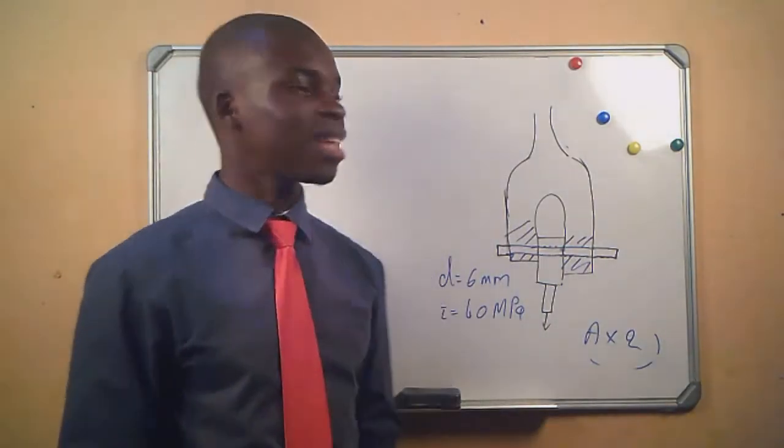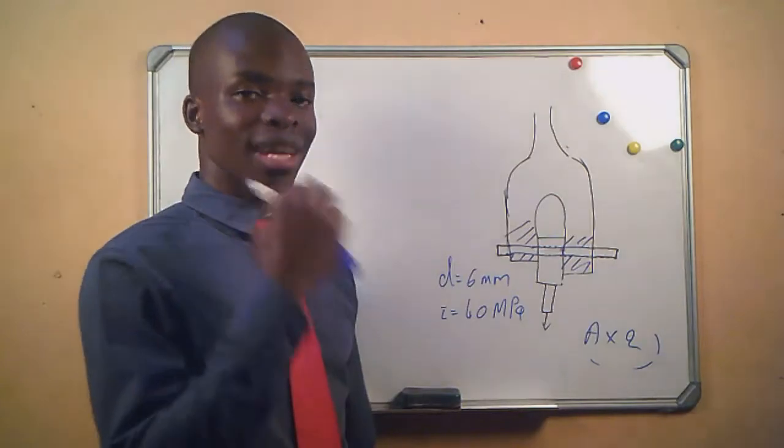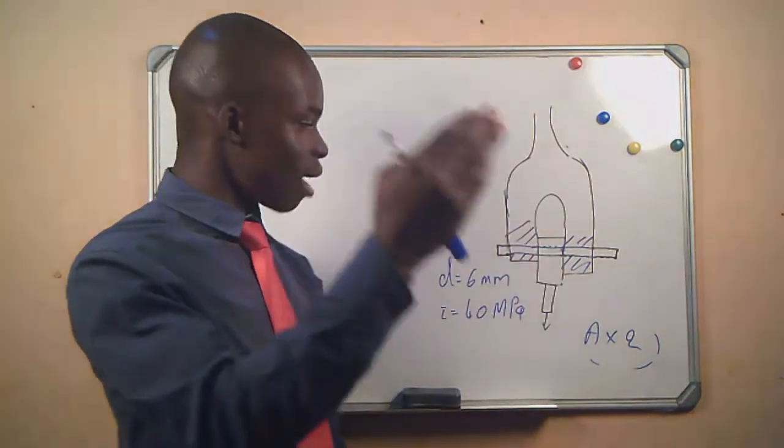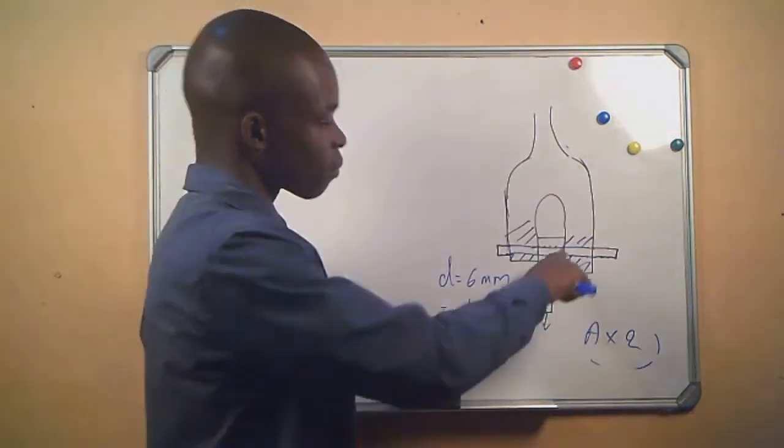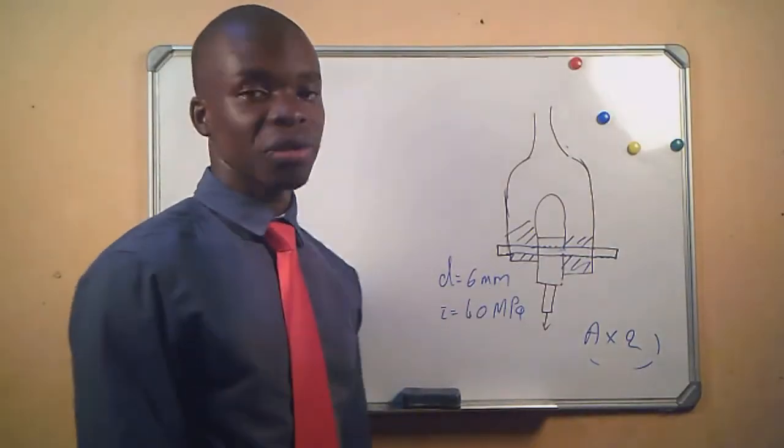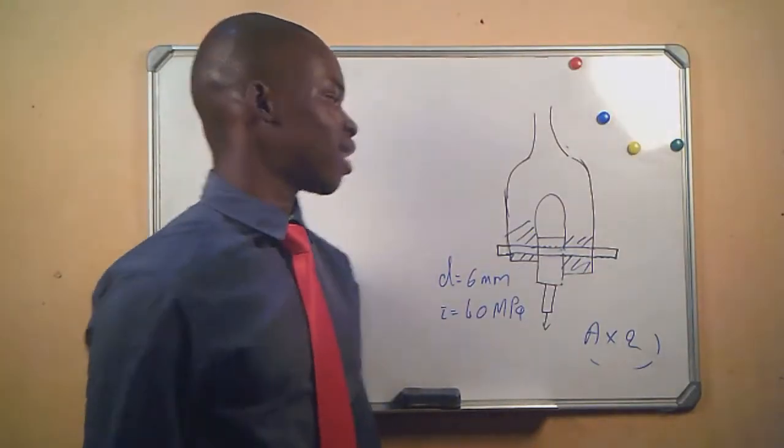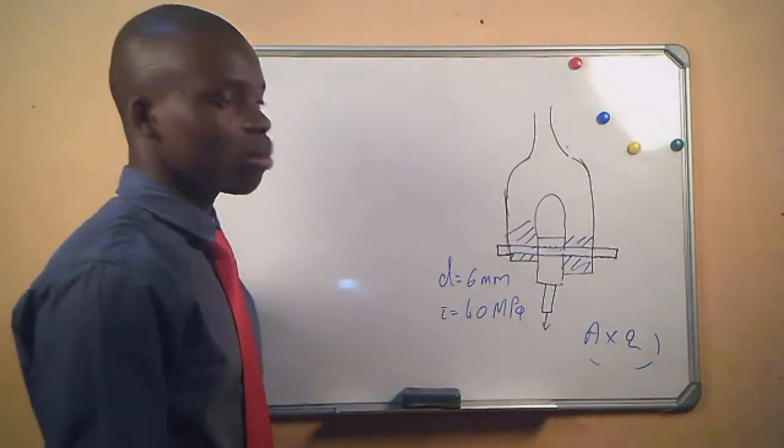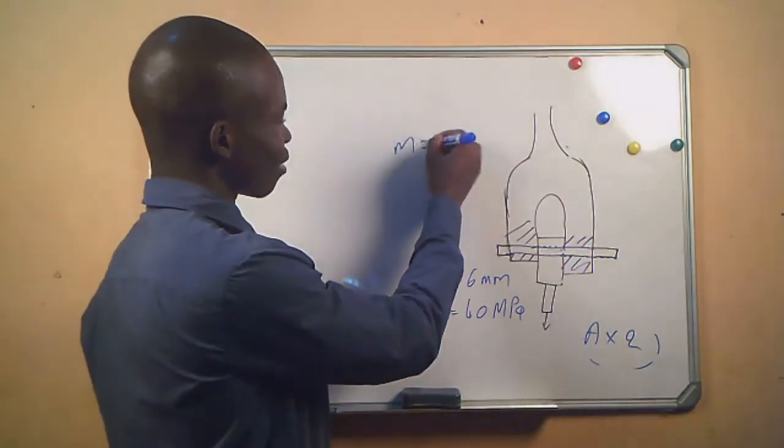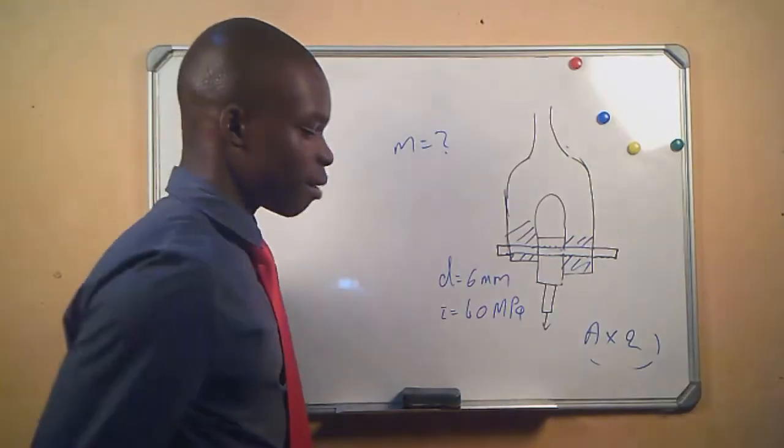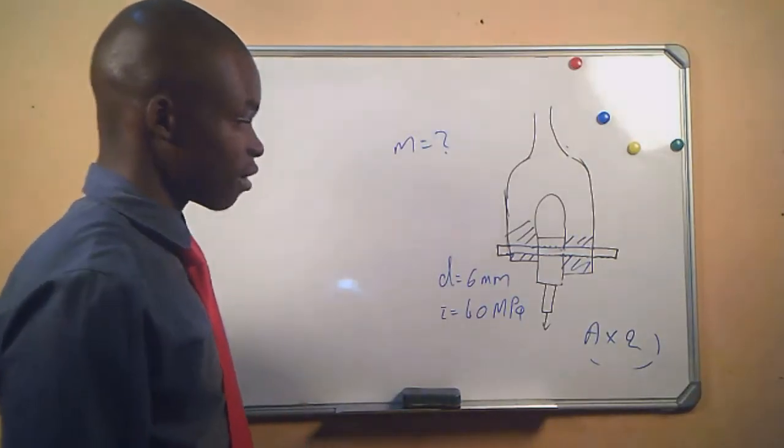Therefore we must include the two areas so that we are able to get the correct answer, to get the correct force or the correct amount of answer that we'll be looking for when we are now dealing with two areas. And then here they said we must calculate the mass that can be lifted by this device.